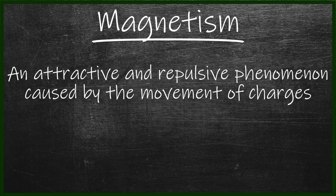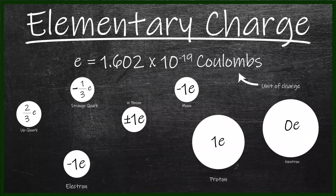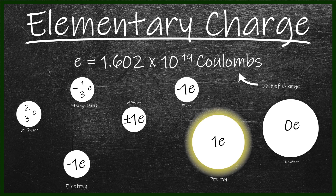Charge is simply a physical property, just like the color blue. While colors are described using names, charge is described using the elementary charge, which is a numerical value attributed to really tiny particles that make up all known matter, such as the proton and electron. The movement of such charged particles is what generates magnetic fields.